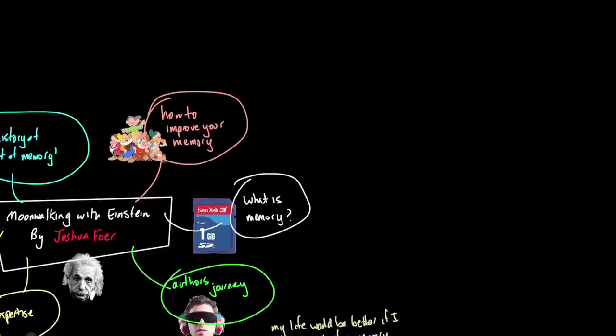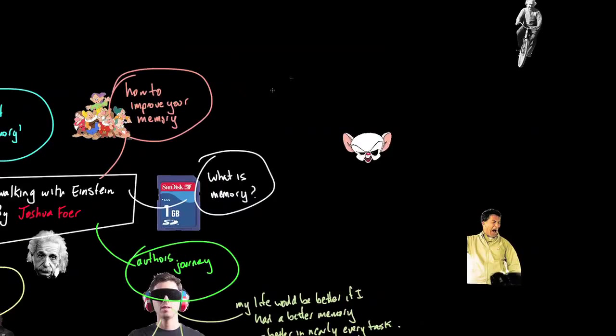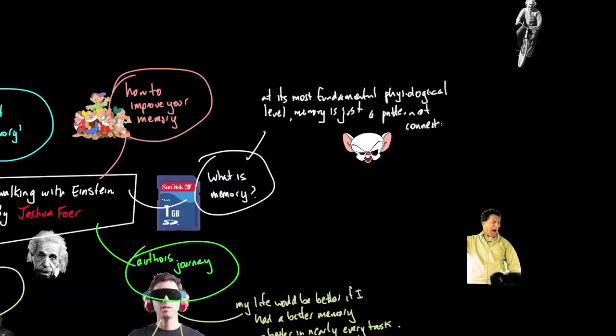What is memory? This is not a medical book by any stretch. So really, he just covers off this very lightly. We could say that fundamentally, at a physiological level, memory is just a pattern of neurons in the brain. We don't go into too much more detail other than they exist in the brain. You can't really see them, but they certainly are there.